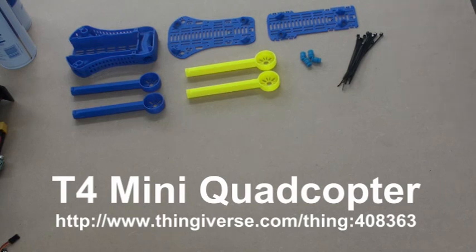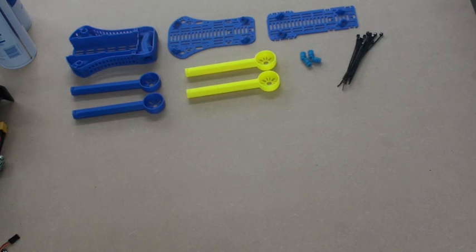This is a quick guide for assembling the T4 mini quadcopter body, the 3D printed design that's available on Thingiverse.com. This one I'm doing today is a 315 size frame, but the 250 size frame is exactly the same process.